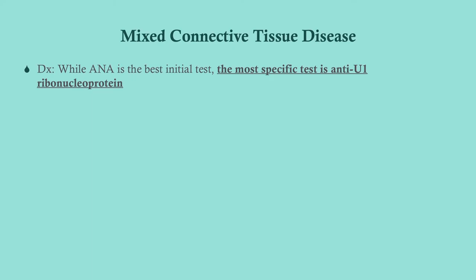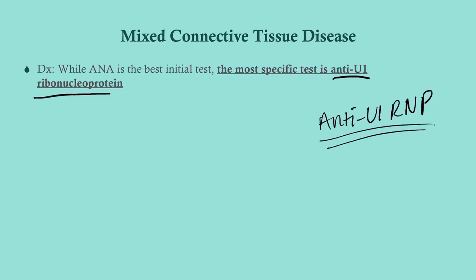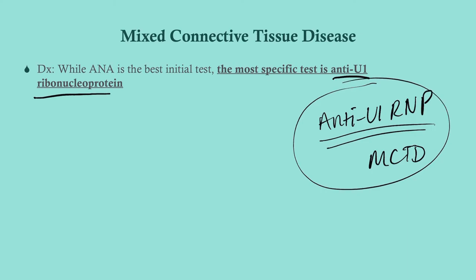ANA is the best initial test, but the most specific test is anti-U1 ribonucleoprotein, often written as anti-U1 RNP. This is our specific autoantibody for MCTD, and this is what you want to order. It will almost always be elevated and present in patients with MCTD.